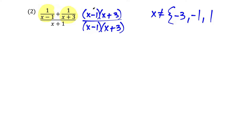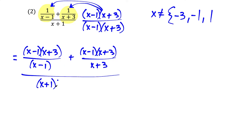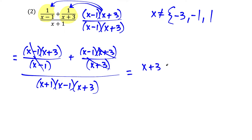We're going to multiply the first fraction by x minus one times x plus three, and the second fraction as well. In the next line, we're going to have x minus one times x plus three over x minus one, plus x minus one times x plus three times one over x plus three. The entire thing is over x plus one times x minus one times x plus three. Now we can cancel: x minus one over x minus one cancels, x plus three over x plus three cancels. We're left with x plus three on top, plus x minus one, over x plus one times x minus one times x plus three.